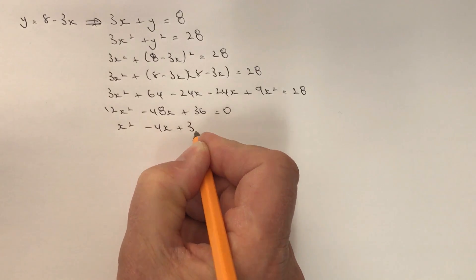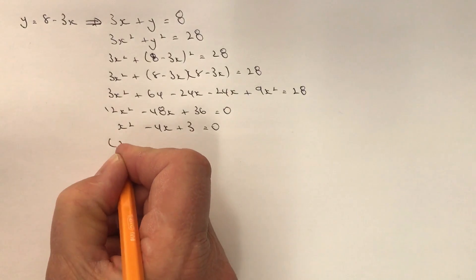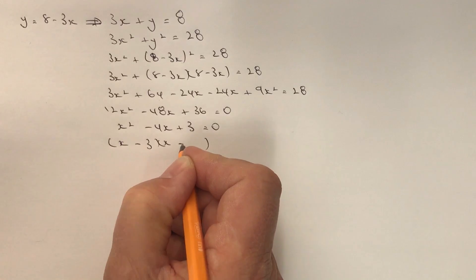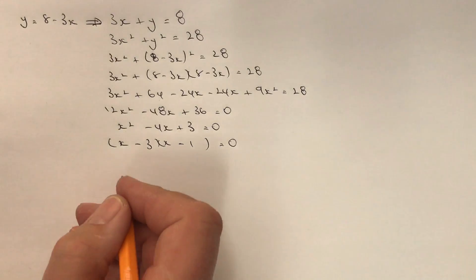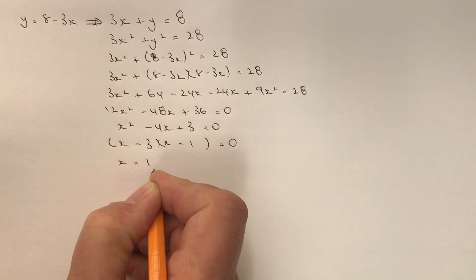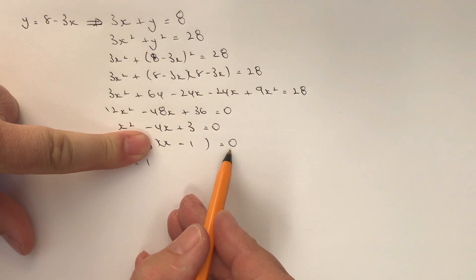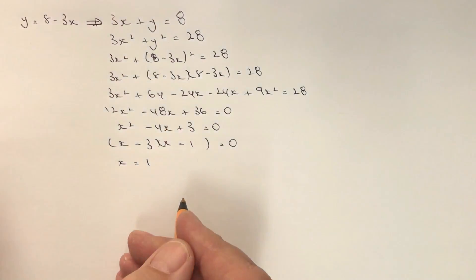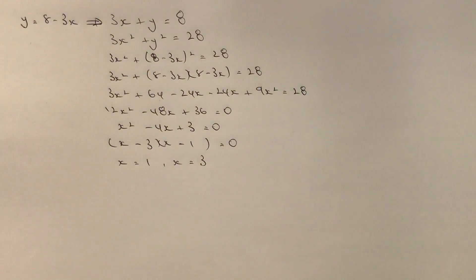And then that will factorise out very simply as x minus 3 and x minus 1 equals 0. So therefore I've got my two values of x, one of which is where x equals 1. If I put my finger over there, I've got x minus 1 equals 0. Similarly, I've got x minus 3 equals 0, so x equals 1 and x equals 3.